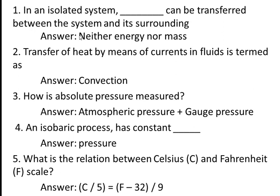First question: in an isolated system, dash dash can be transferred between the system and its surroundings. Answer is: neither energy nor mass. There are three kinds of system — open, closed, and isolated. In an open system, energy and mass both can be transferred. In a closed system, only energy can be transferred and mass cannot. In an isolated system, neither mass nor energy can be transferred.